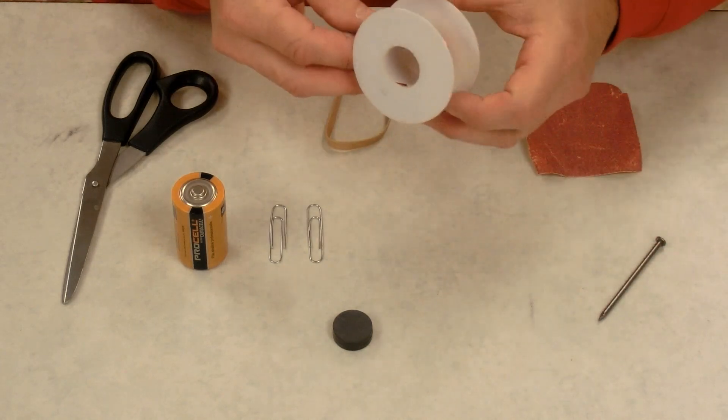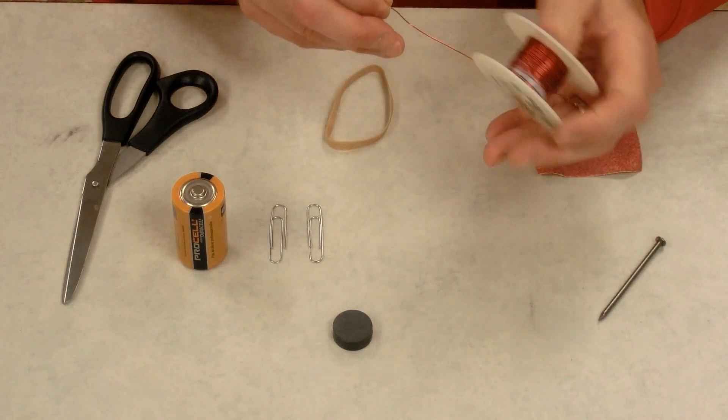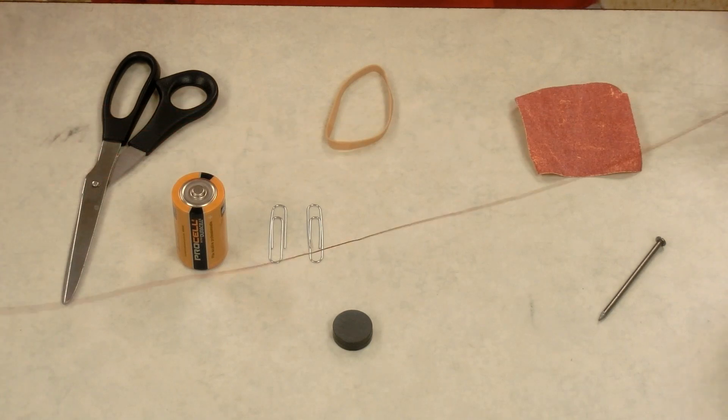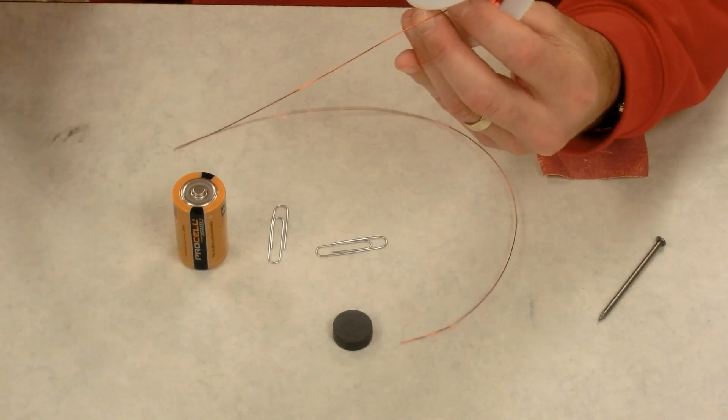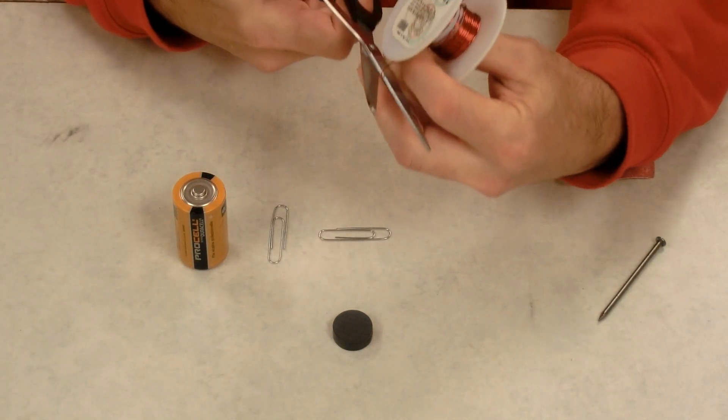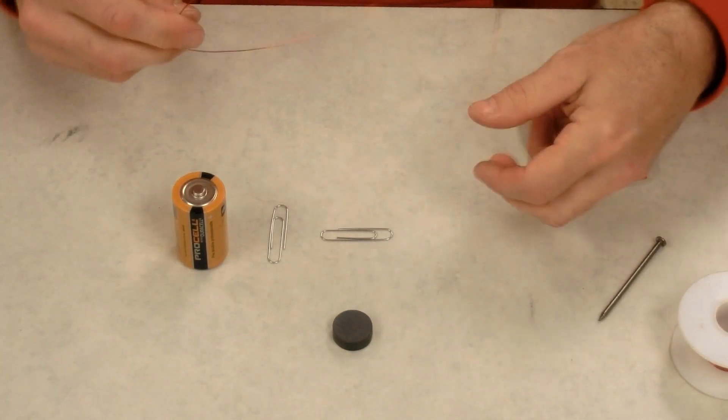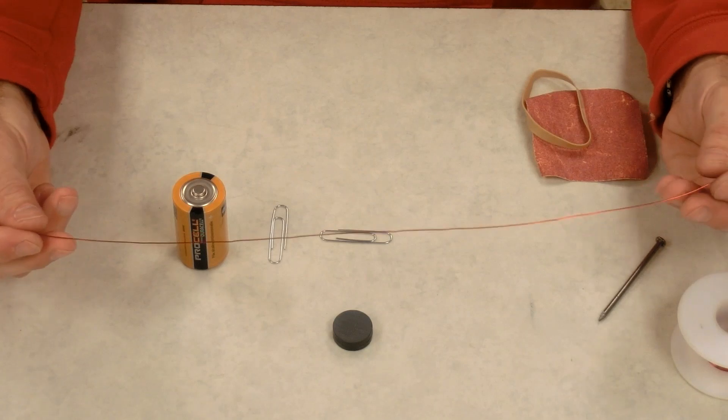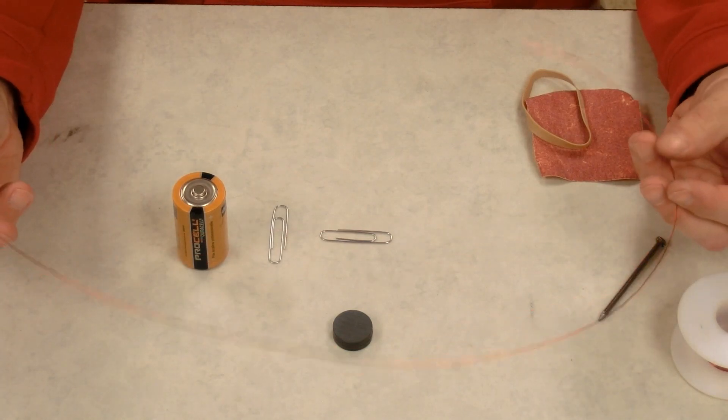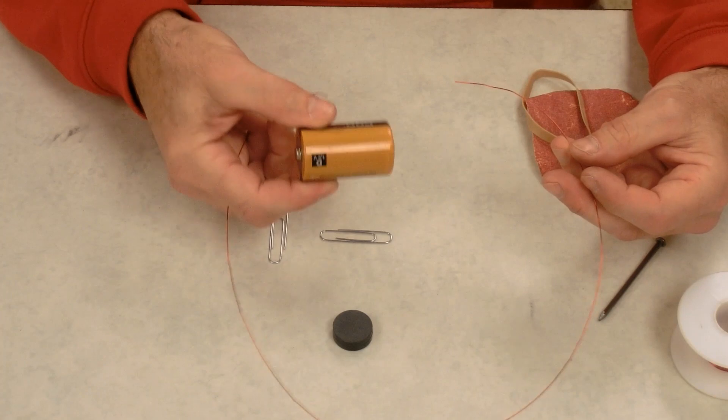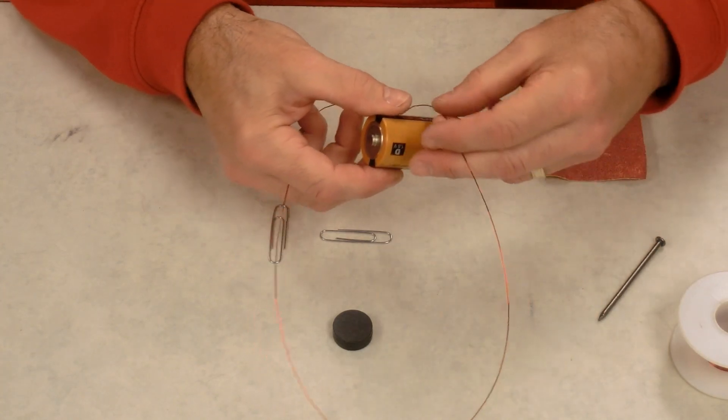So I'm going to take about two feet of thin wire, it's normally called bell wire, cut off the piece, and this is going to be the wire I use for my coil. Now you can make coils of different diameters. I've found that the diameter of a D cell generally works quite well for this.